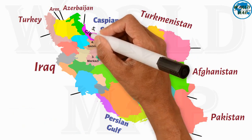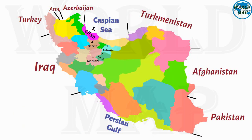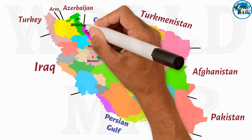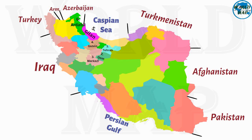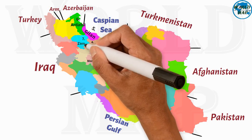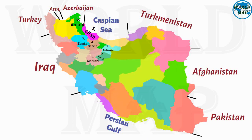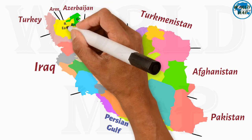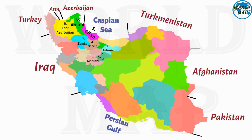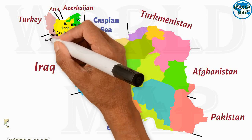Number 5: Gilan. Number 6: Ardabil. Number 7: Zanjan. Number 8: East Azerbaijan. Number 9: West Azerbaijan.